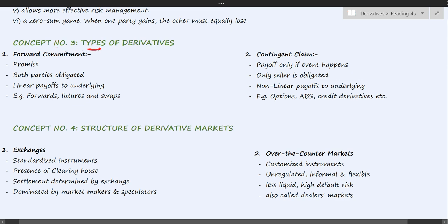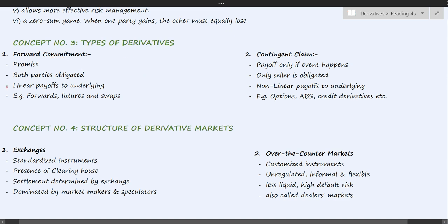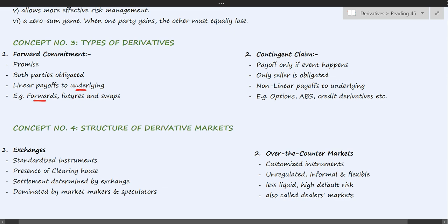Concept number three: types of derivatives. There are two types — forward commitments and contingent claims. A forward commitment is a legally binding promise in which both parties are obligated to perform some action, so the transaction must happen. There is no option. The payoffs are linear, meaning if the underlying goes up, the derivative's value also goes up, and vice versa. Examples include forward contracts, futures contracts, and swaps.